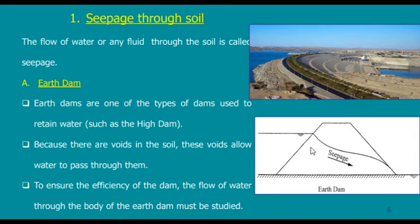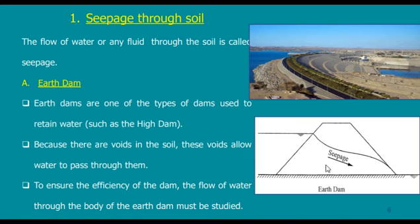From inside, the dam should be clay to prevent water from passing, but all around we must add big boulders to give strength, because clay alone would be too weak for such a large structure. To prevent the dam from moving, we add strong material. The clay core prevents seepage, and the outer portion is made of boulders, gravel, and sand for strength.